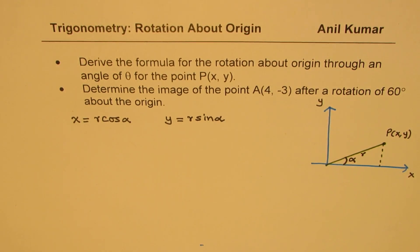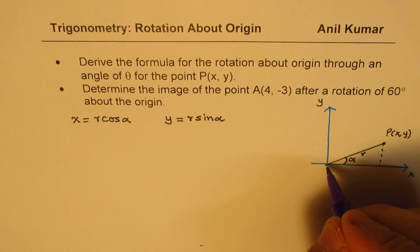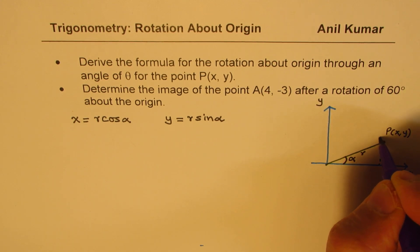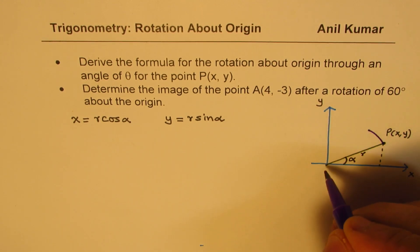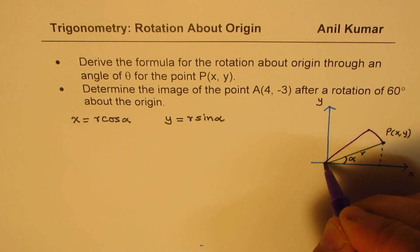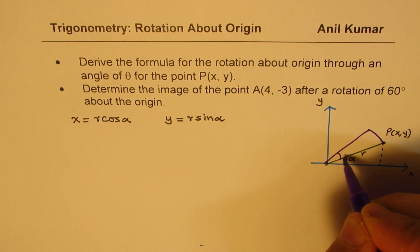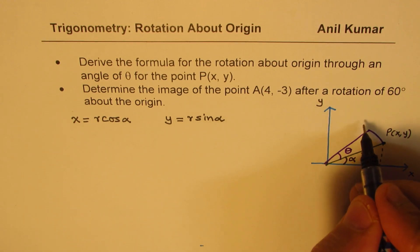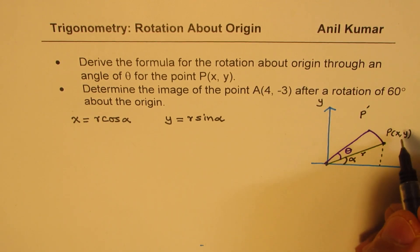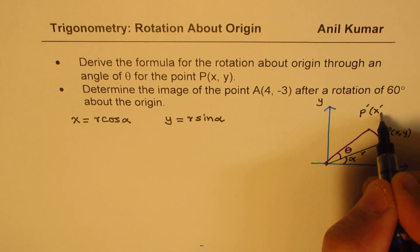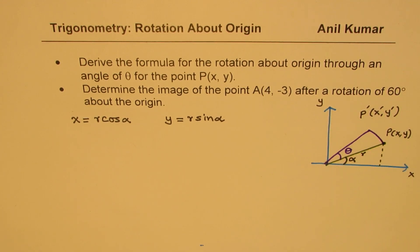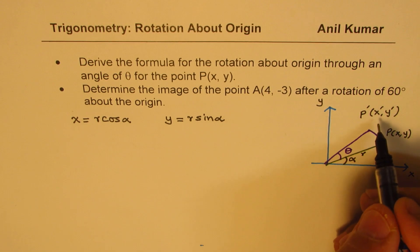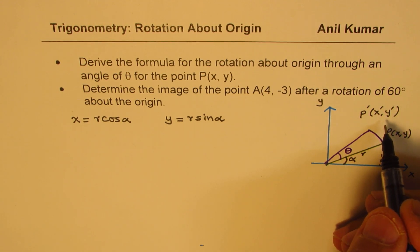Now we want to rotate this point by angle theta about the origin — like this. So we want to rotate it about the origin through an angle of theta. When we do so, we have an image of this point P, which we write as P'(x', y'). That becomes the image of point P whose coordinates we need to find.